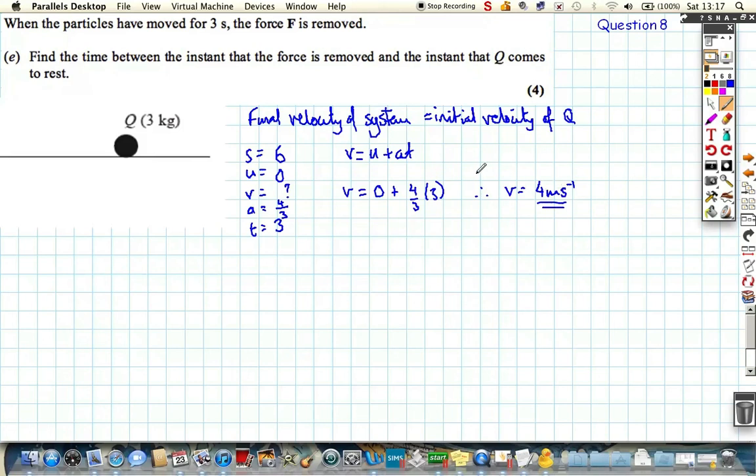So that's the final velocity of the system, which is actually going to be the initial velocity of Q. Now we're considering Q on its own, because it's not part of the system, no force pulling it along, so the string is now going to become loose, and P is just going to be in its own little particle, Q is going to be its own little particle.